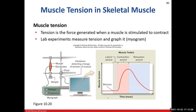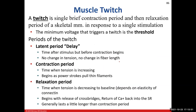Now let's talk about muscle tension — the force generated when a muscle contracts. In our experiment, we attach electrodes to a muscle that mimic what a nerve does and stimulate the muscle to contract. A muscle twitch is a single brief contraction period followed by a relaxation period of skeletal muscle in response to a single stimulation. We reach a specific minimum voltage — the threshold — to trigger that muscle twitch, which we know as negative 65 millivolts.